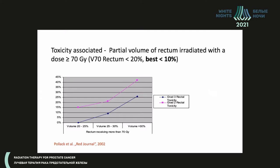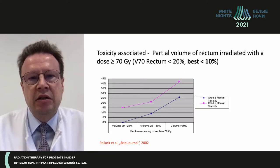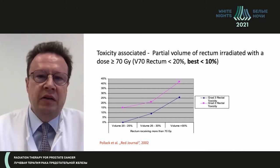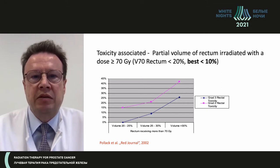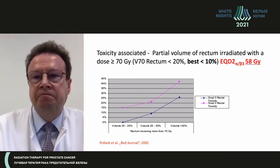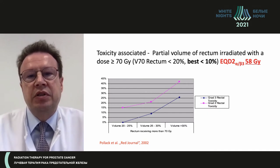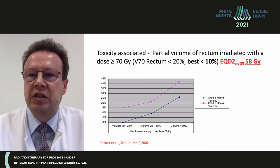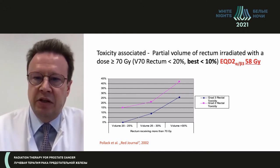We learned from these trials how to deal with high doses and to try to avoid higher-grade toxicity. One example is the V70 of the rectum — the volume irradiated with 70 Gy or higher — and you see here that ideally it should be kept below 20 percent, or best below 10 percent. When we talk about hypofractionation, this V70 in EQD2 alpha-beta 3 corresponds to 58 Gy, so please keep that in mind.